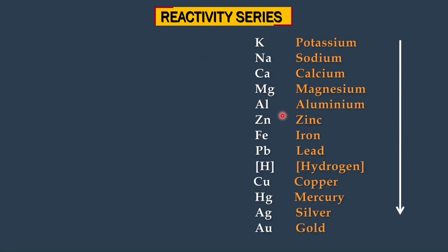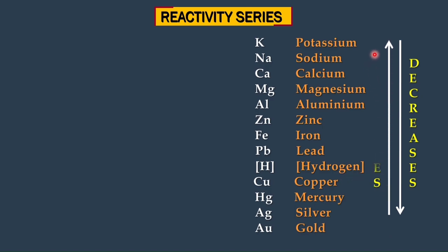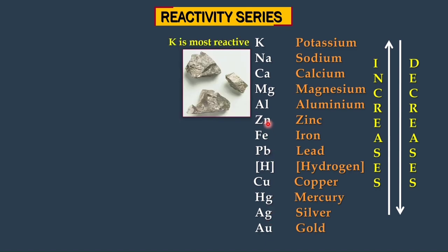The reactivity series is a list of metals arranged together in the order of their decreasing activities. As you go down the reactivity series, reactivity decreases, and as you go up, reactivity increases. These are the list of metals and their respective symbols. The most reactive metal in the reactivity series is potassium, whose symbol is K.